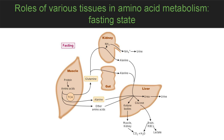In the kidney, glutamine releases ammonium into the urine and is converted to alanine and serine. In the cells of the gut, glutamine is converted to alanine. Alanine, the major glucogenic amino acid, and other amino acids enter the liver where their nitrogen is converted to urea, excreted in the urine, and the carbons are converted to glucose and ketone bodies, which are oxidized by various tissues for energy.